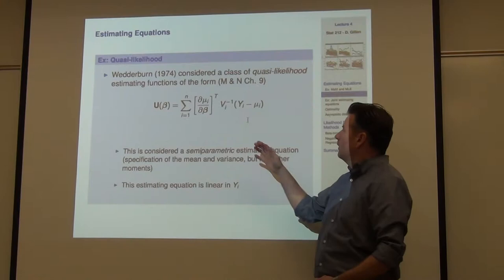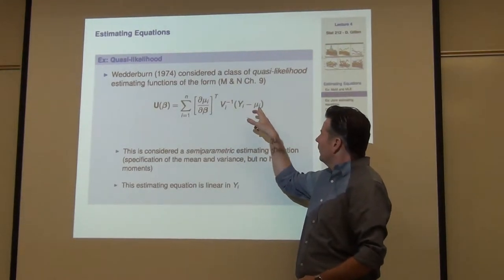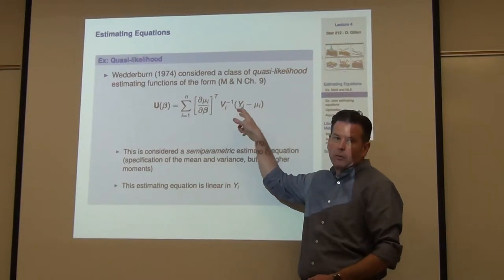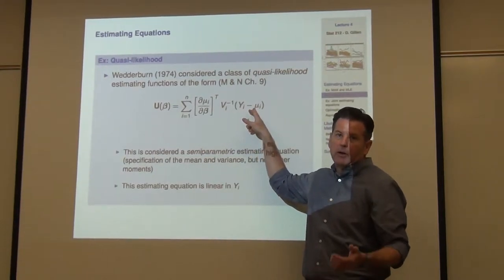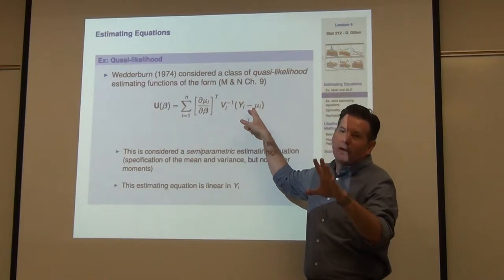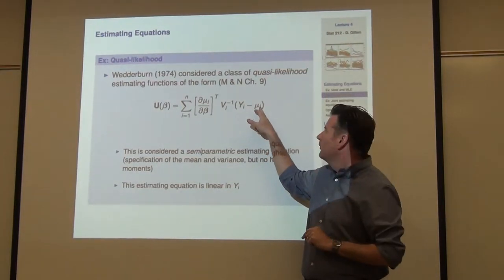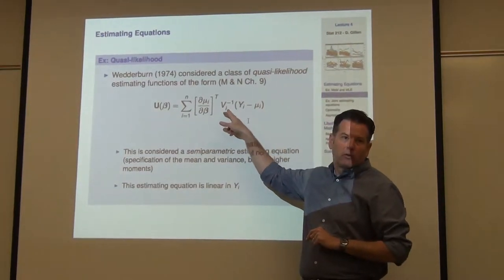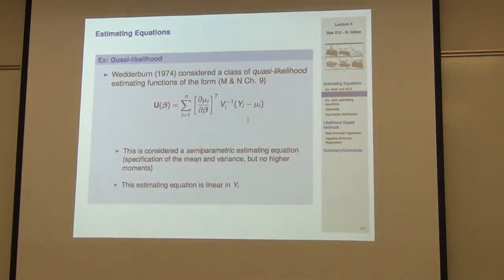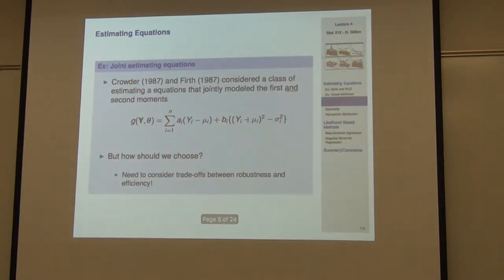And again, that's kind of credited to Wedderburn back in the day, where he kind of said, look, if we look at this exponential family theory, when I get down to it at the end of the day, really all I'm doing is making some sort of a statement about the first and second moments. The first moment is usually the thing I care about, so I'm always going to have to make some statement about that, and now I just have to make one additional assumption on the variance.